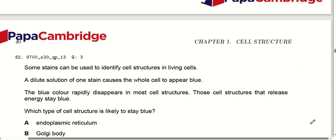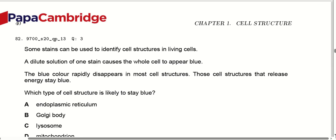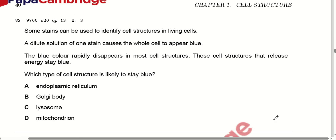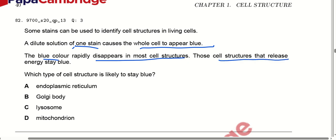Moving to MCQ number 82: some stains can be used to identify cell structures in living cells. A dilute solution of one stain causes whole cells to appear blue. The blue colour rapidly disappears in most cell structures. The structures that release energy stay blue — energy means ATP, which is released in mitochondria. So the mitochondria is the only structure that stays blue. Option B is correct.